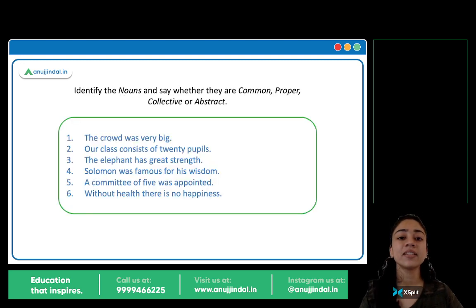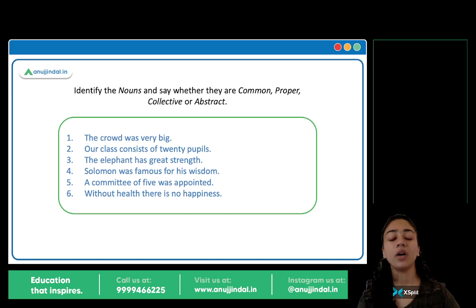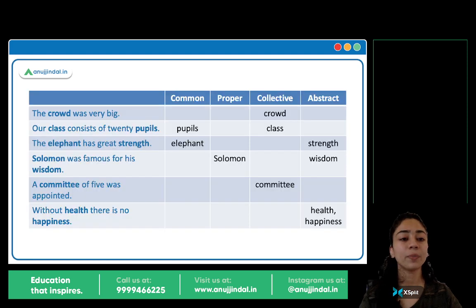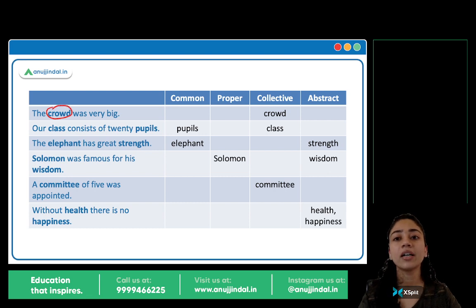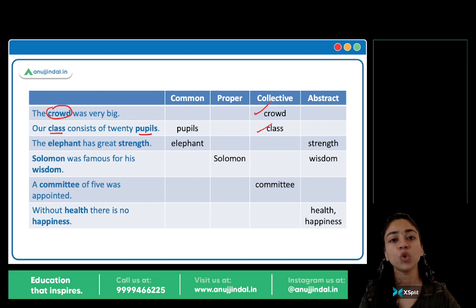Now you have six sentences in front of you. Aapko har sentence mein find out karna hai ki noun kya hai — find out the noun in each sentence, and then batana hai ki woh common noun hai, proper noun hai, collective hai, ya abstract hai. Pause the video and note your answers. First sentence: 'The crowd was very big.' Crowd is our noun — collective noun. A group, a collection of people. Next sentence mein doh nouns hain: class and pupils. Class humara collective noun hai — a collection of students. And pupils — common noun.